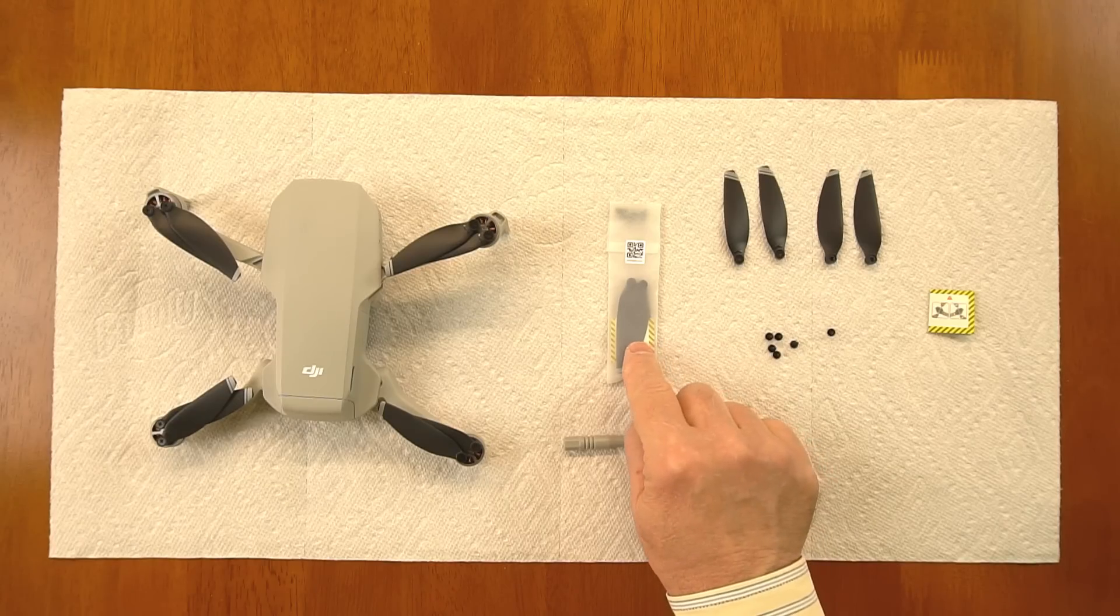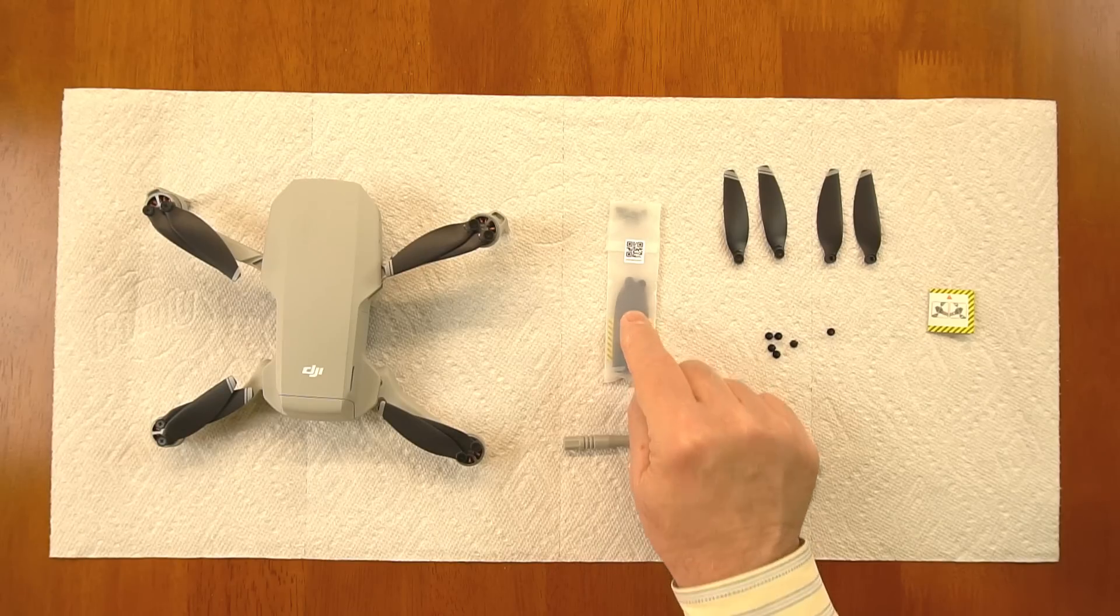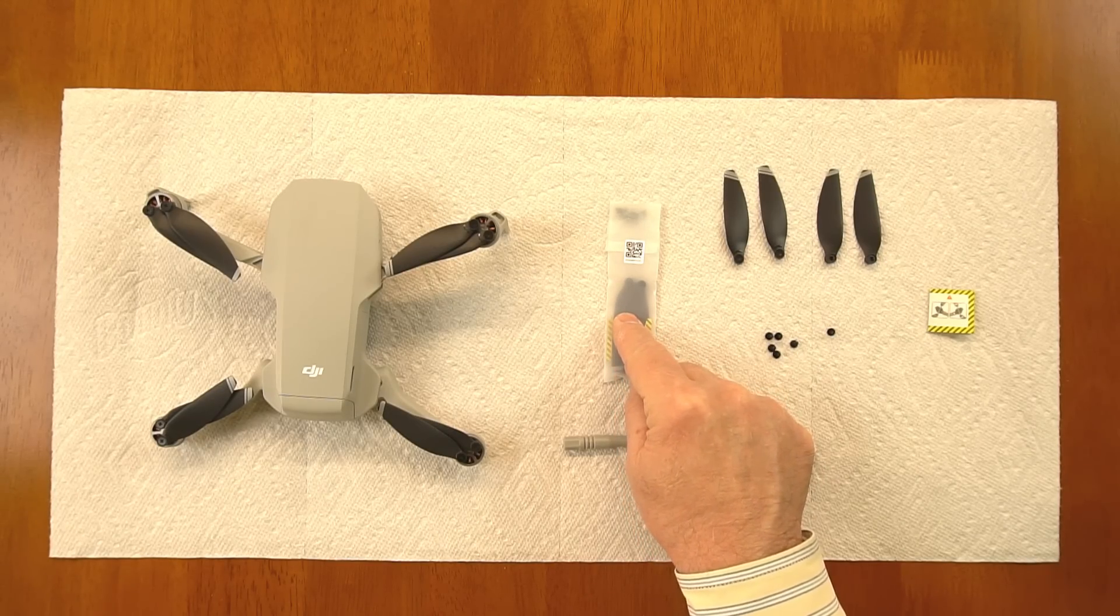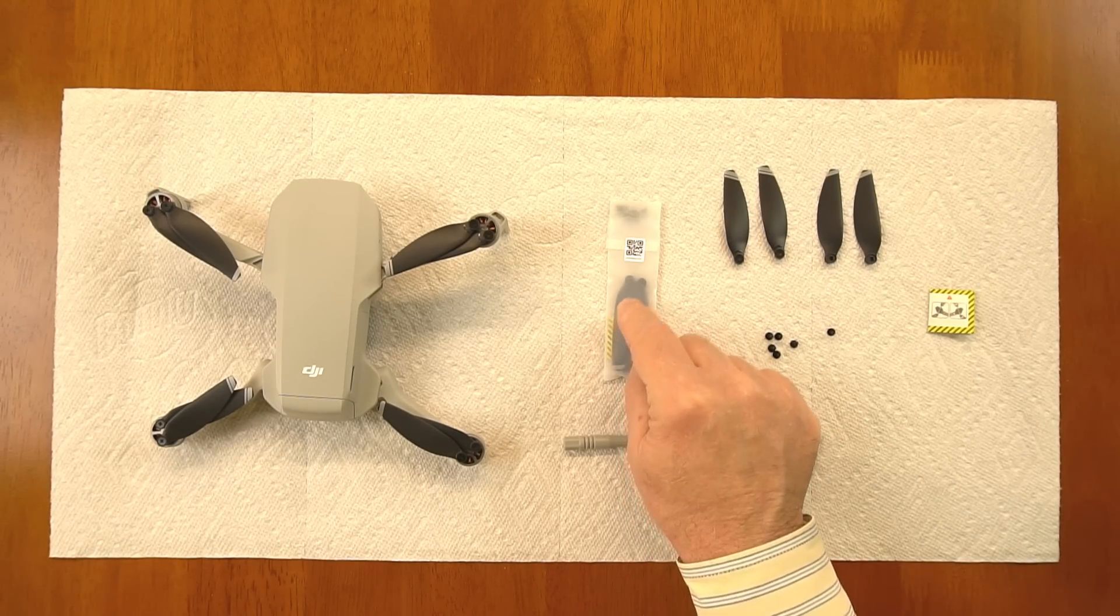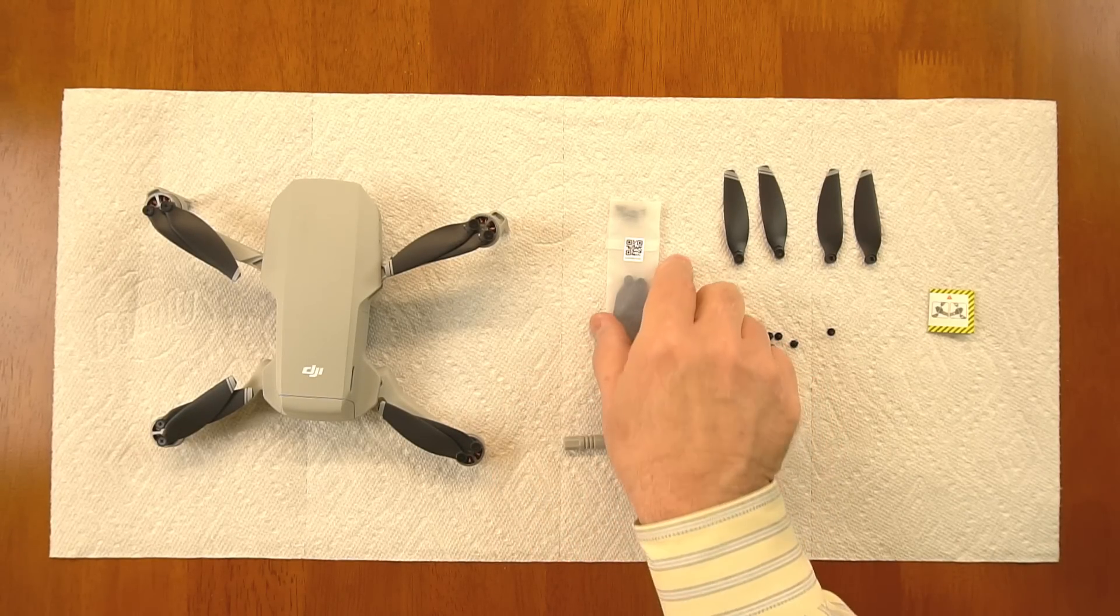Now if you bought the basic kit you got one of the propeller replacement kits included, if you bought the fly more combination you got three of these. I would recommend immediately if you bought that single kit to order a bunch of these up because they're inexpensive and they're definitely something you're gonna want to have in your kit if you damage your propeller so you can keep flying.